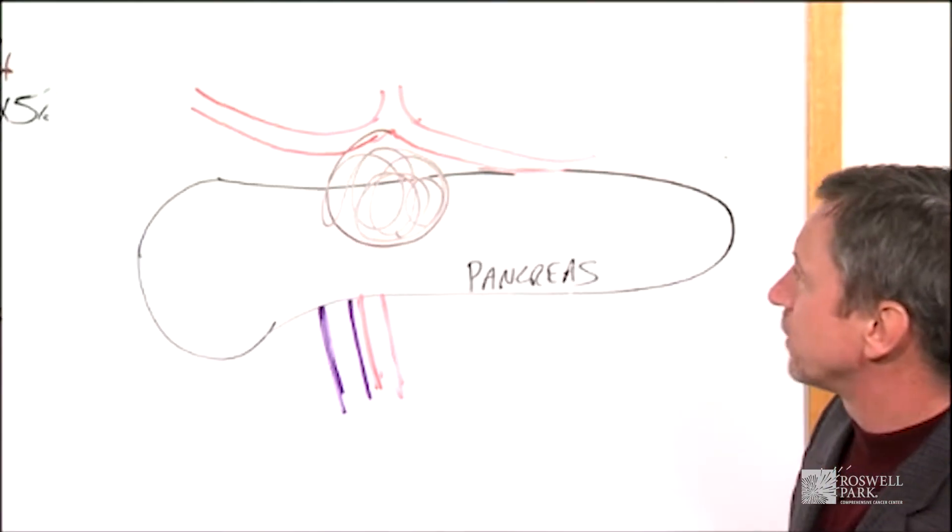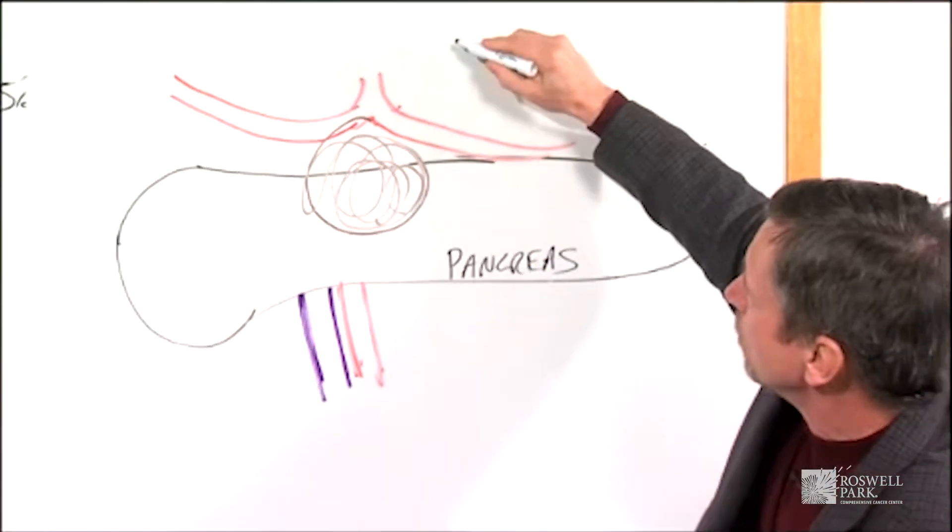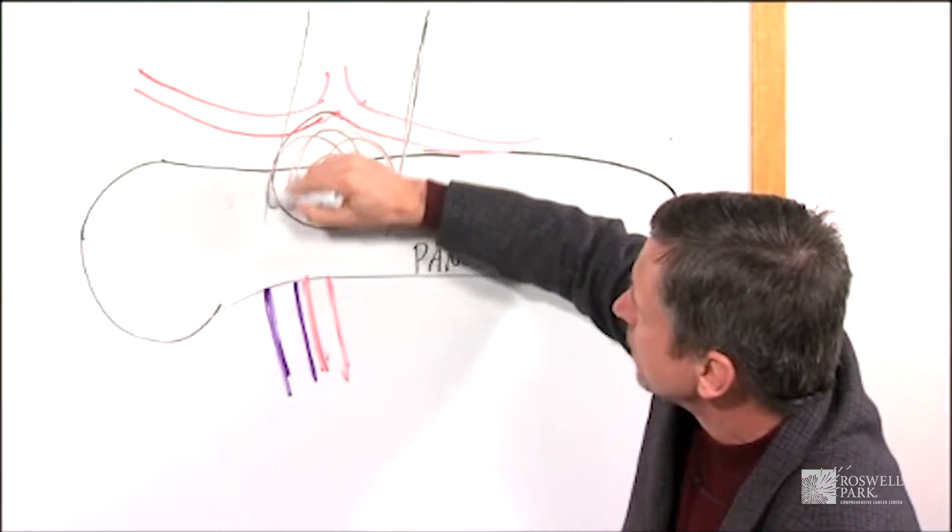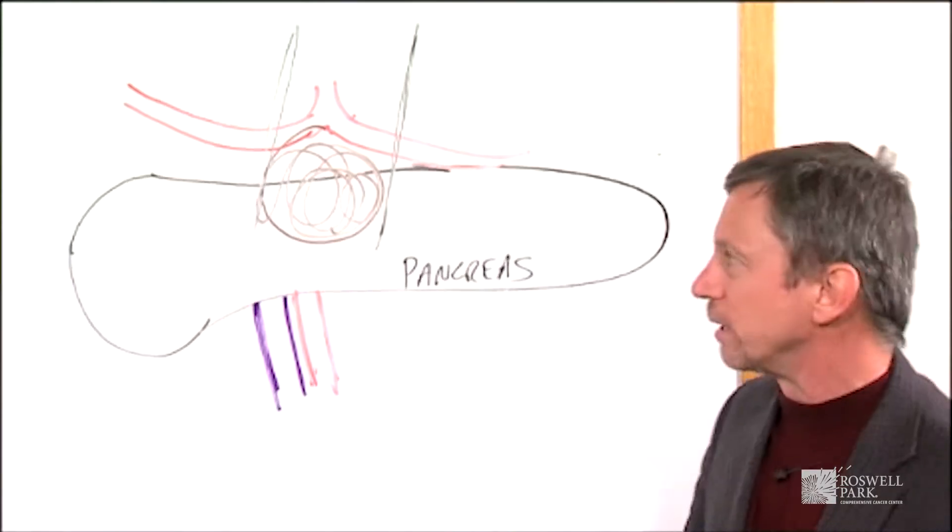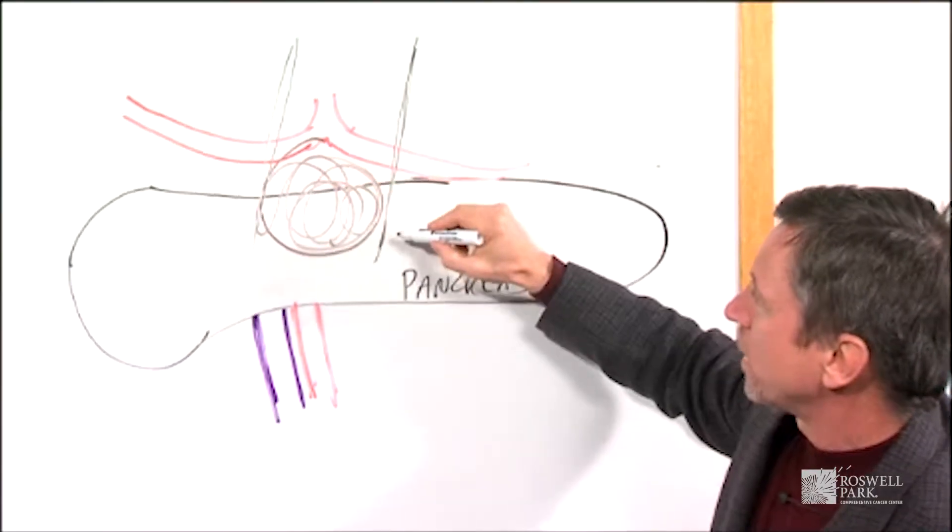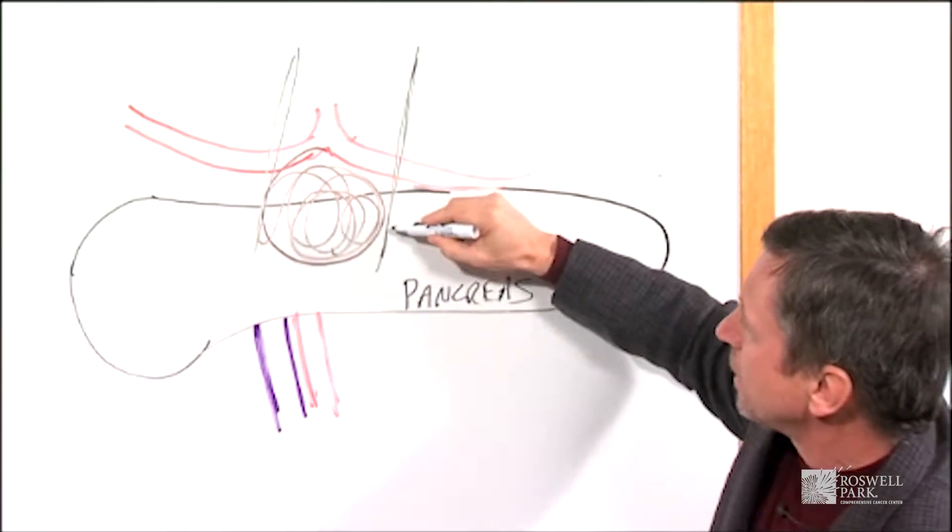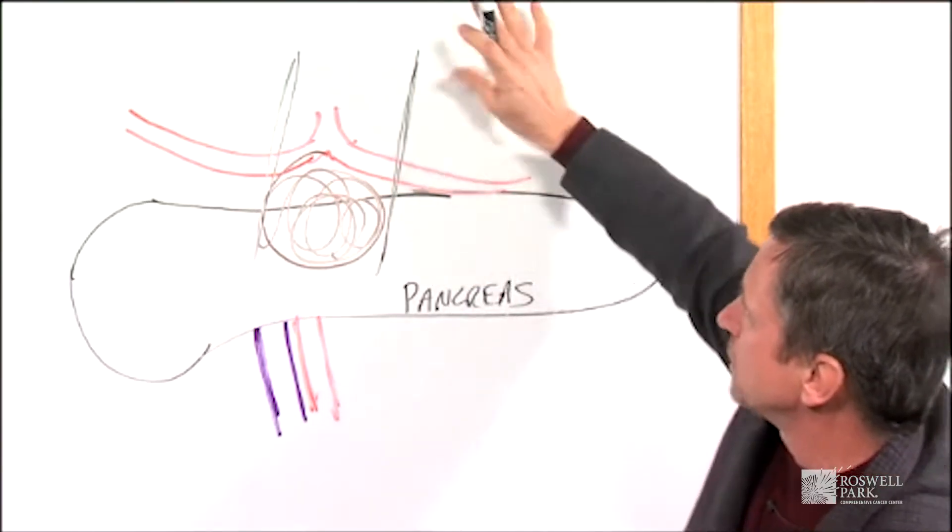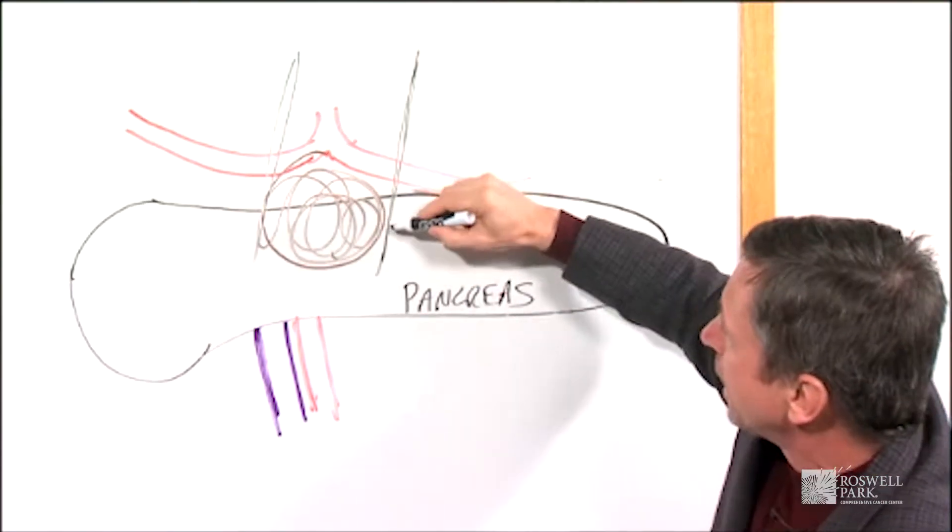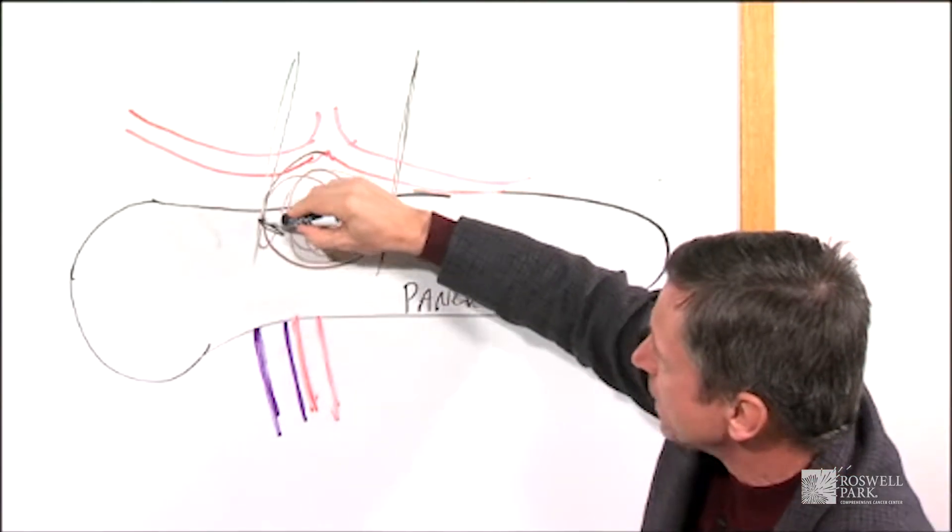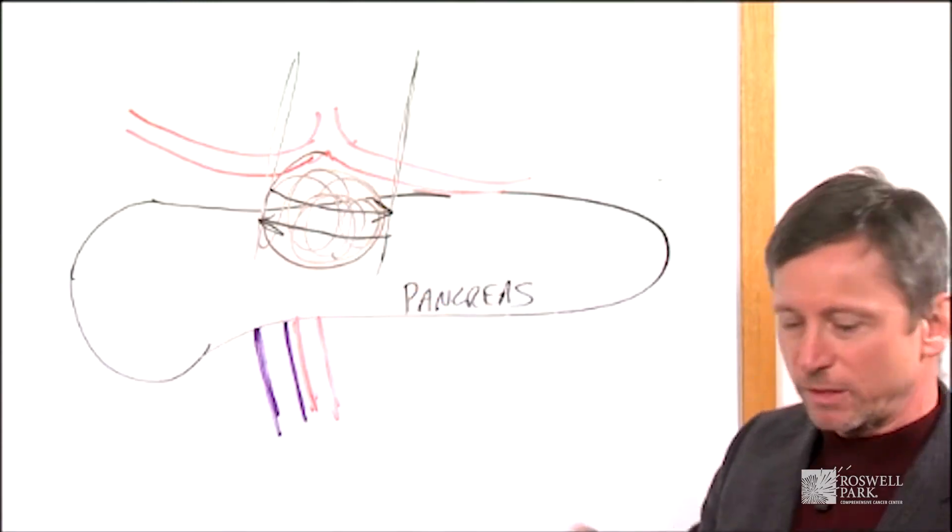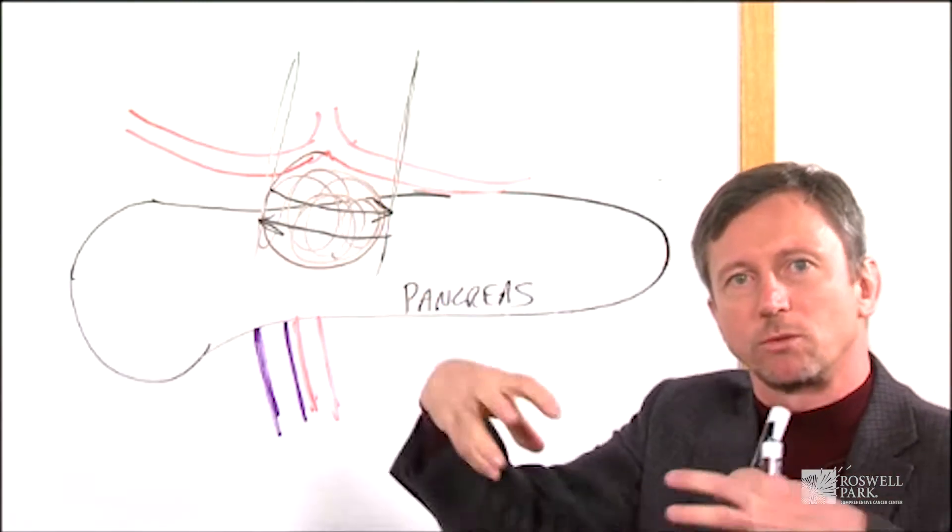The idea with NanoKnife is that probes can be inserted through the skin or through an incision directly around the tumor. Then high voltage energy is applied to these probes because it's hooked up to a generator, and essentially the current passes between these two probes and treats the tumor. So the idea here is that you put the probes around the tumor.